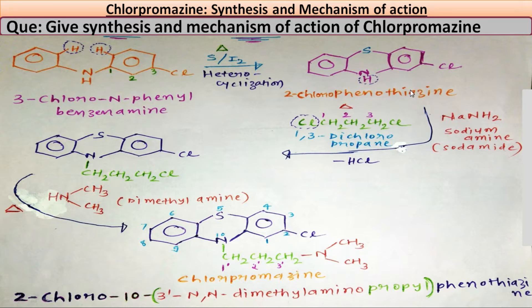This 2-chloro phenothiazine is then treated with 1,3-dichloropropane — here two chloro groups are present on the first and third positions, so it is 1,3-dichloropropane — in the presence of sodium amide, which is also known as sodamide. Due to heating, the chloro from 1,3-dichloropropane and hydrogen from 2-chloro phenothiazine are liberated as hydrogen chloride, and a new compound is formed.